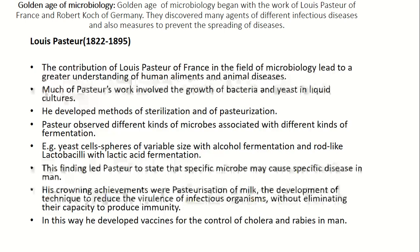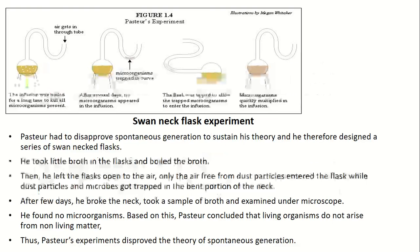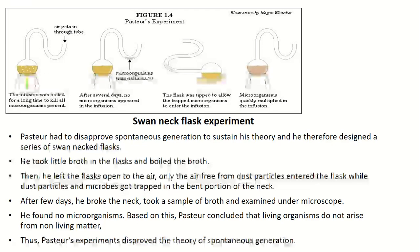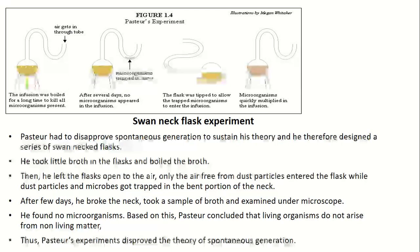In this way he developed vaccines for the control of cholera and rabies. Here is the swan-neck flask experiment. The infusion was boiled for a long time to kill all microorganisms present. After several days no microorganisms appeared in the infusion. The flask was tipped to allow the trapped microorganisms to enter the infusion, and microorganisms quickly multiplied. This is the swan-neck experiment, which Pasteur used to disprove spontaneous generation.